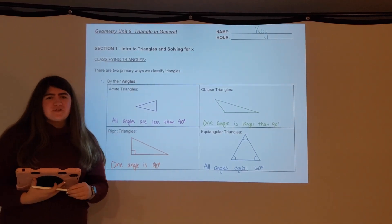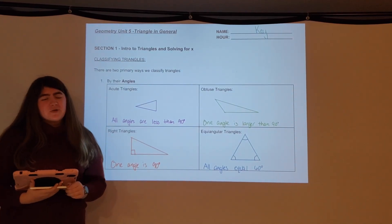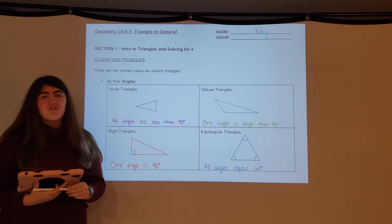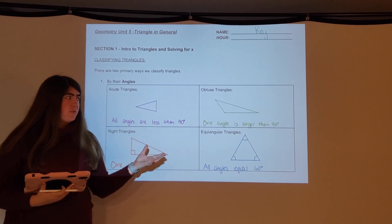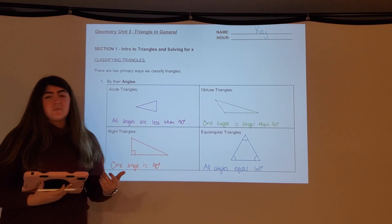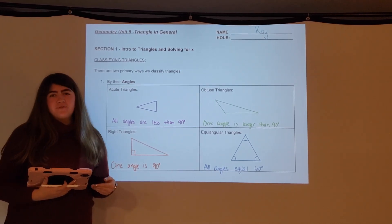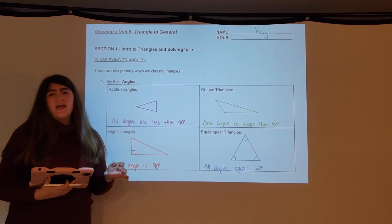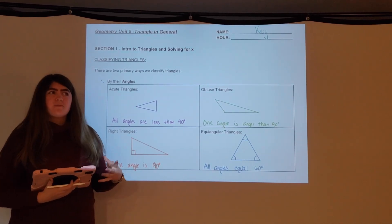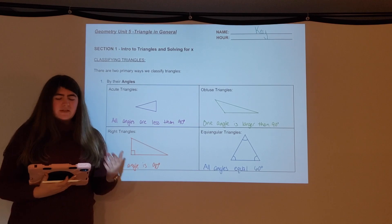Hello everyone. Today we are starting unit 5. We are going to be covering some more information about triangles in general. Section 4 was all about triangles, triangle congruence, and we were proving their congruence. Now we are through the proofs and we're just looking at some more specifics about triangles — information about triangles and what you can do to solve for missing pieces.